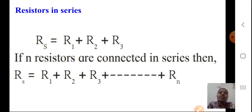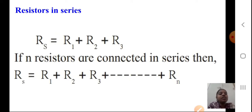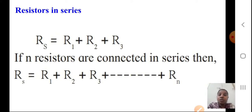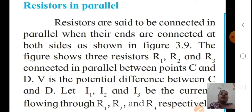And if N resistors are connected in series, you get RS equal to R1 plus R2 plus R3 plus so on plus Rn. So you have studied about this in the last presentation and we have seen the circuit diagram also. Now today we are going to study the resistors when they are connected in parallel. The next topic is resistors in parallel.